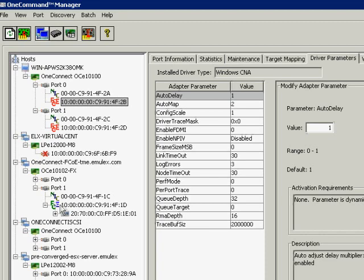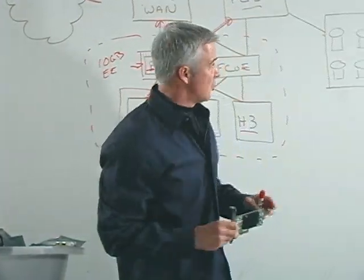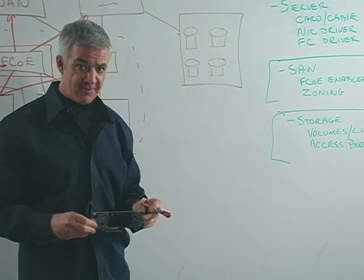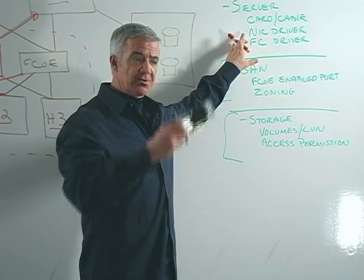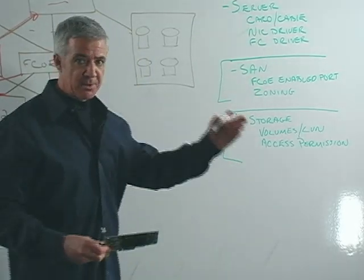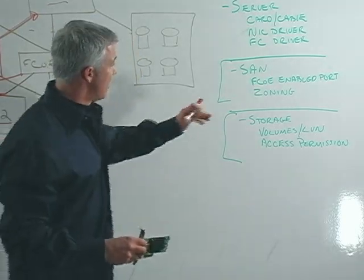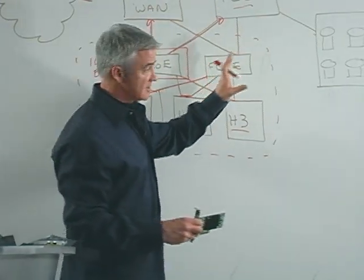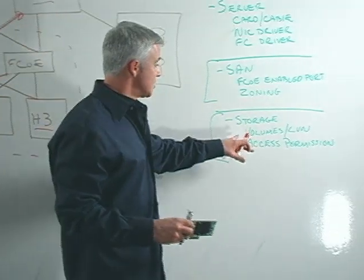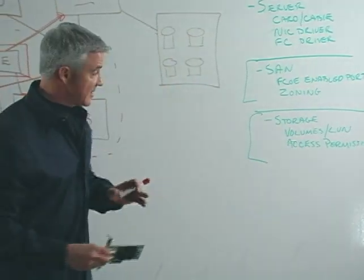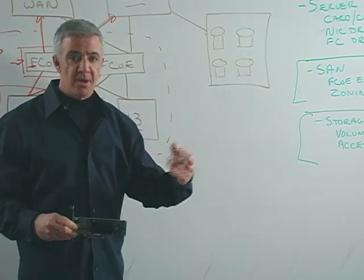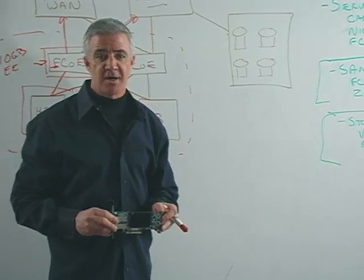Let's go back to the board and recap where we are. We've taken the card and installed it in the server. We've identified that the card represents itself as both a NIC adapter and a Fiber Channel HBA to the server. We've installed our NIC and Fiber Channel drivers and reviewed the connectivity through One Command Manager. Make sure your SAN component and connectivity into the FCoE-enabled switch is configured — sometimes people haven't enabled FCoE on the port. Zoning practices and storage configuration practices remain the same. Once you can gain access to the LUNs you're connecting to, you can install your multipathing I/O components or virtual disk service capability as well. With Emulex Chalk Talk, I'm Bill Fields — I hope this information was helpful.